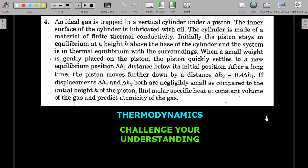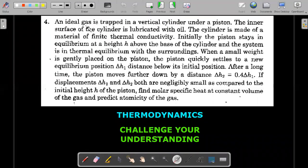Let's move ahead for the formal wording of the question. An ideal gas is trapped in a vertical cylinder under a piston. The inner surface of the cylinder is lubricated with oil to avoid friction. The cylinder is made of material of finite thermal conductivity.